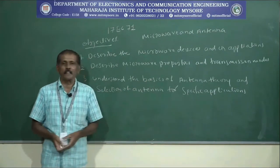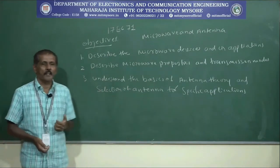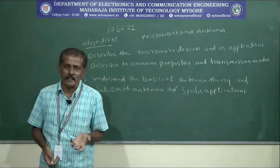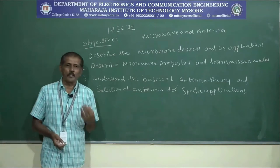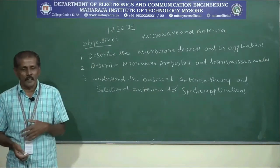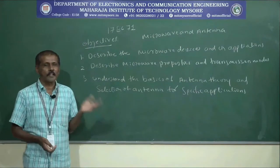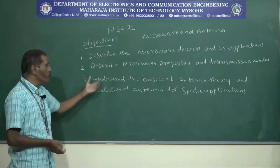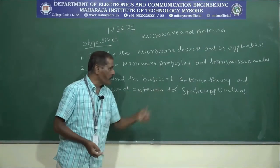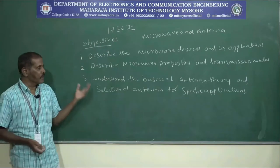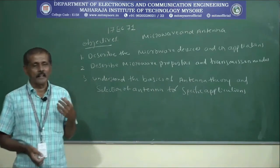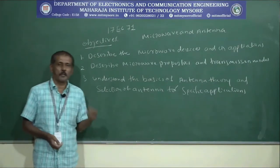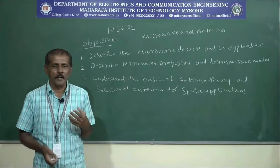The third objective is to understand the basics of Antenna Theory — how the antenna converts an electromagnetic signal into electrical signals and vice versa. That is, how a transmitting antenna works and how a receiving antenna works, and then the selection of the antenna for specific applications, because different applications require different types of antennas.